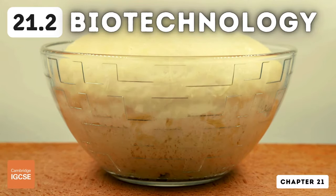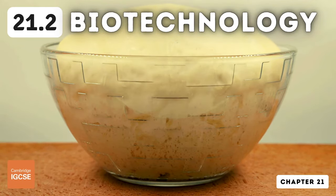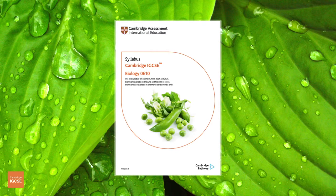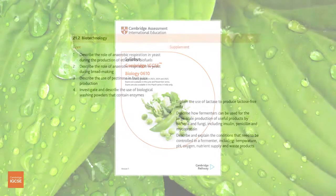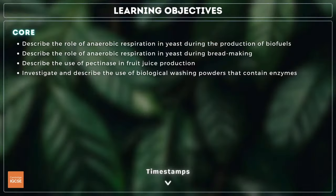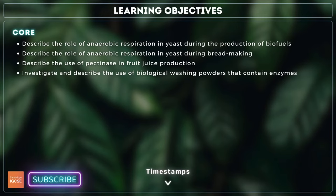Hello and welcome to another complete Cambridge IGCSE biology lesson, where you'll learn absolutely everything you need to know on topic 21.2, biotechnology. We'll be following the Cambridge syllabus exactly. For topic 21.2, you need to describe the role of yeast in biofuel and bread production, describe the use of pectinase in fruit juice production, and investigate and describe the use of biological washing powders.